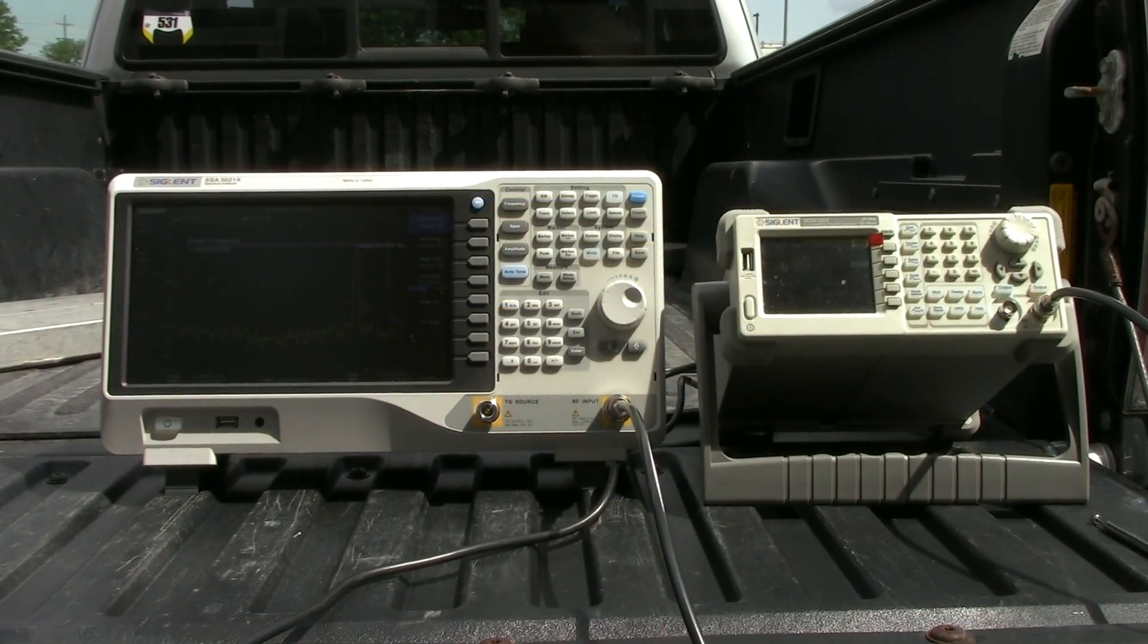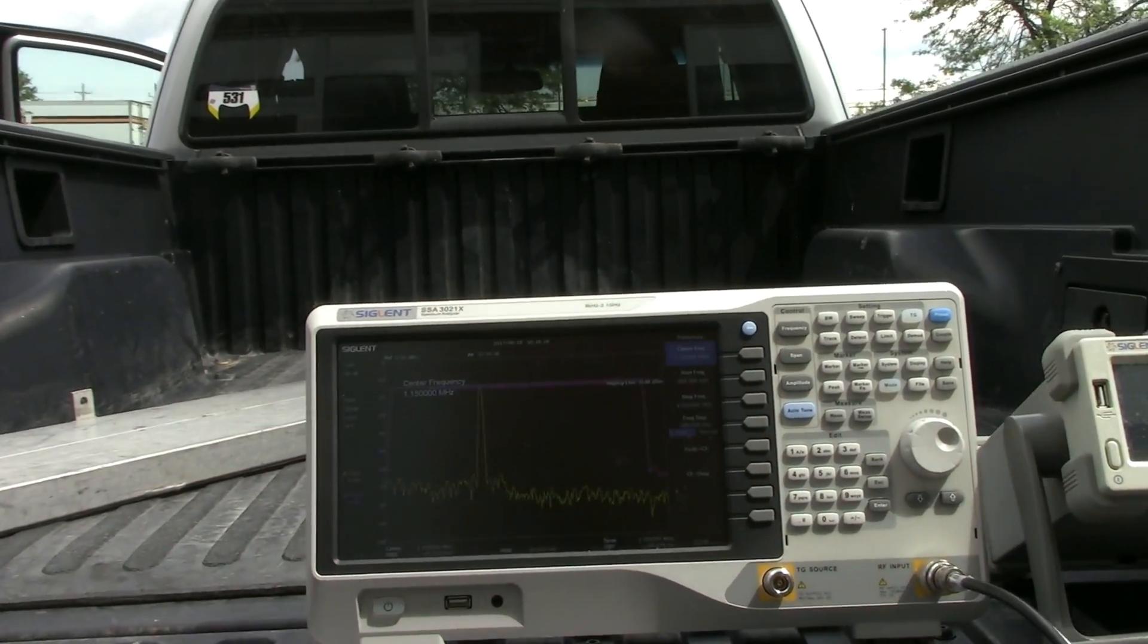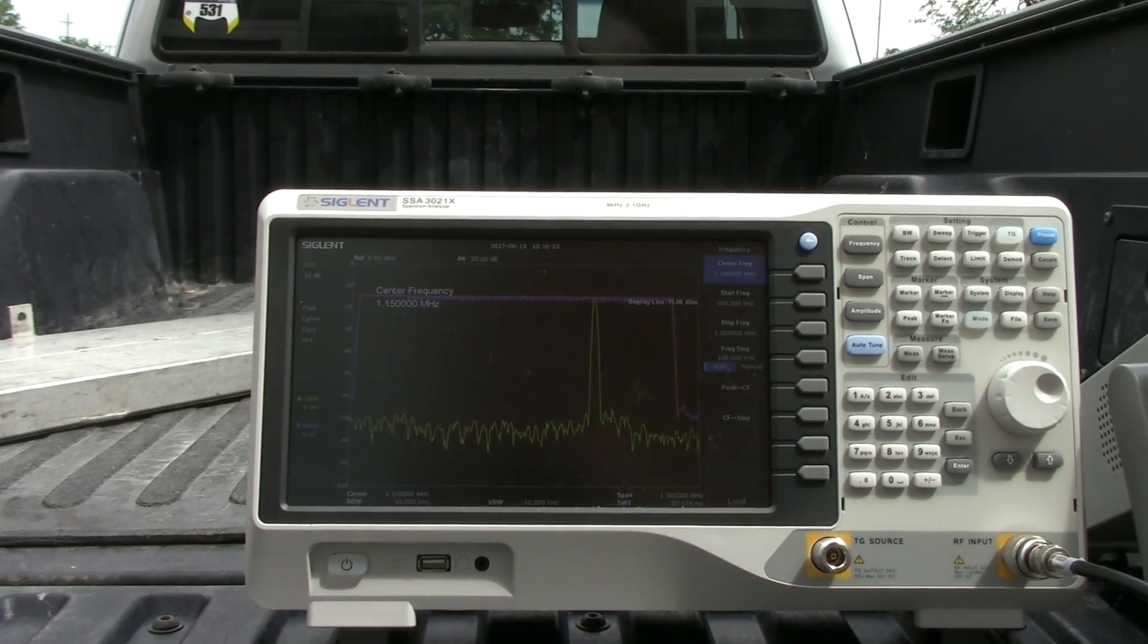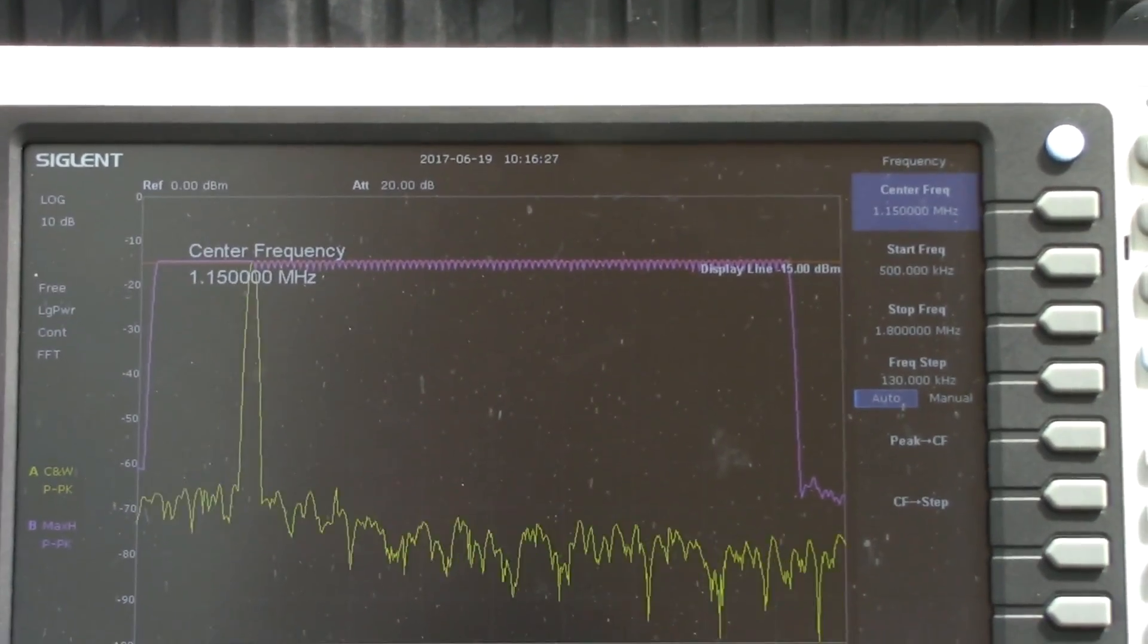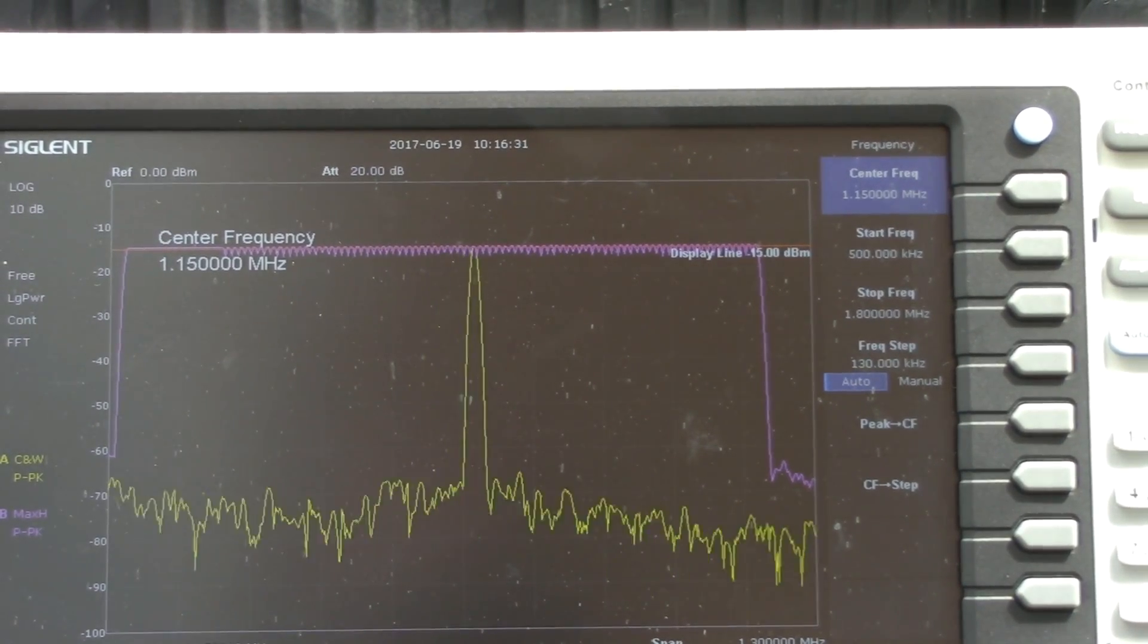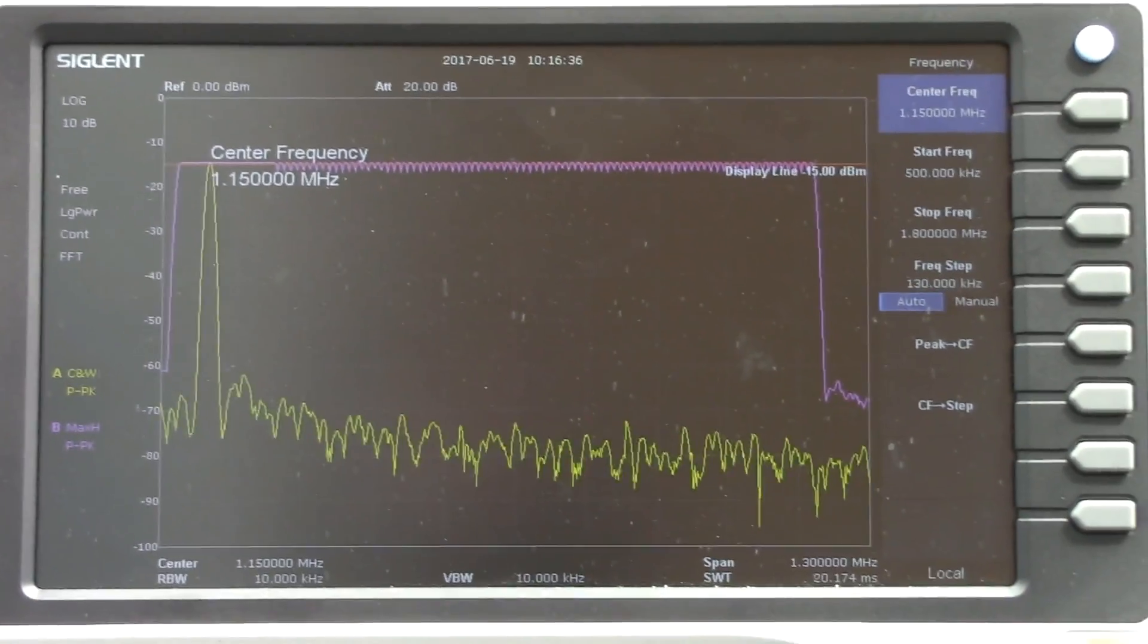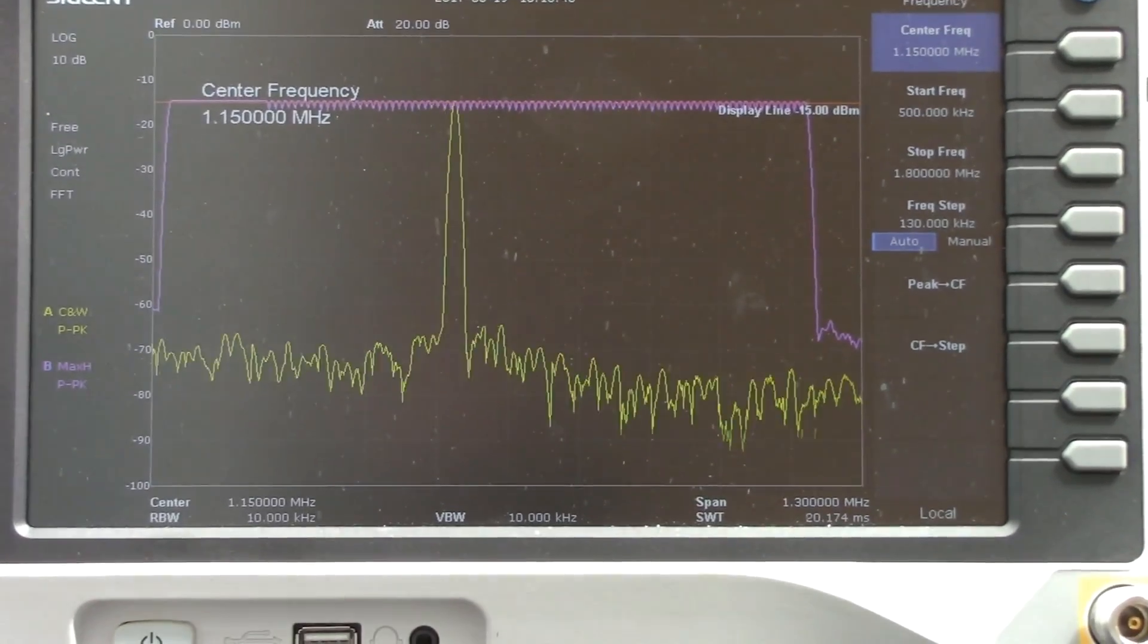And now we're going to go outside. We've got the SDG generator here to the right connected to the mains power by an extension cord. But I have the spectrum analyzer connected to the inverter on my pickup truck. And here we are running that same sweep, 530 kilohertz to 1.7 megahertz at minus 15 dBm, as we had inside our office building when connected to mains.